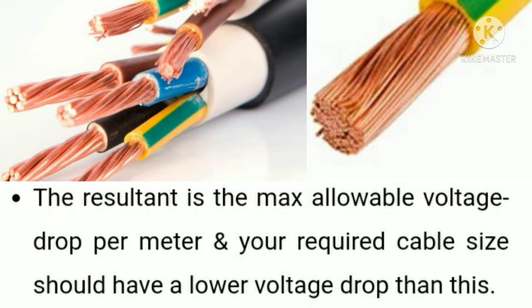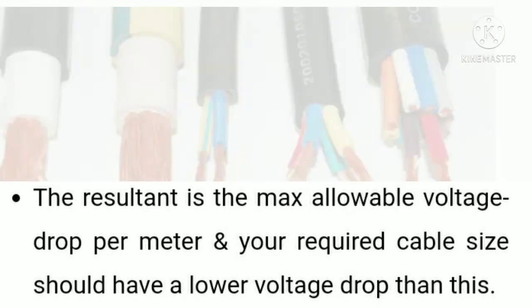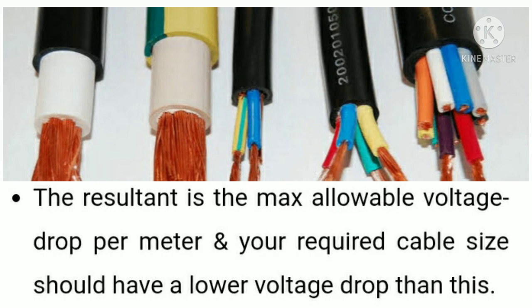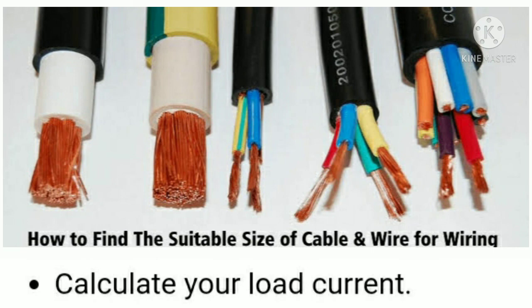The resultant of that division gives you the maximum allowable voltage drop per meter. The required cable size should have a voltage drop lower than this value. The maximum allowable voltage drop is 2.5 percent for any system, and both the load current and the voltage drop are important factors for choosing the right cable and wire.